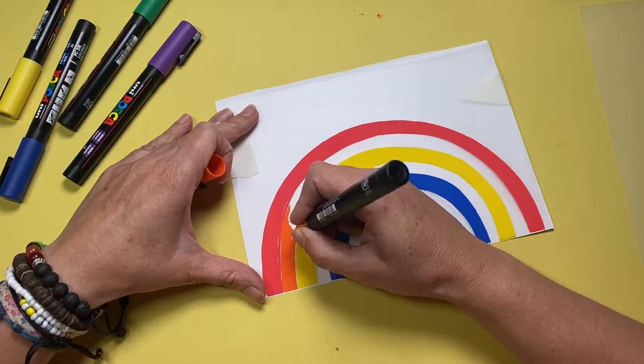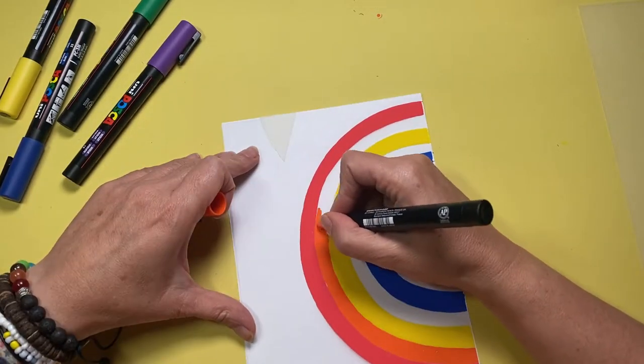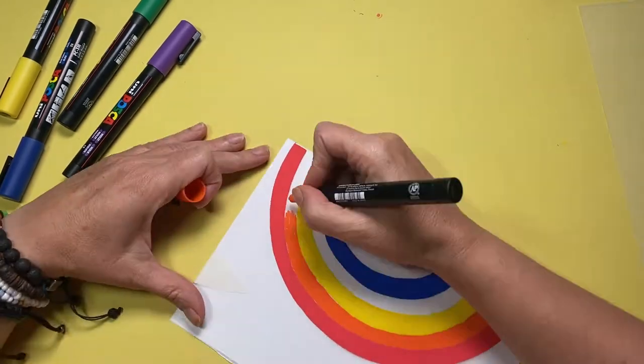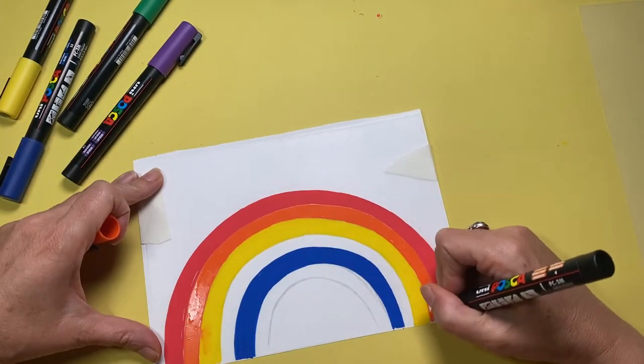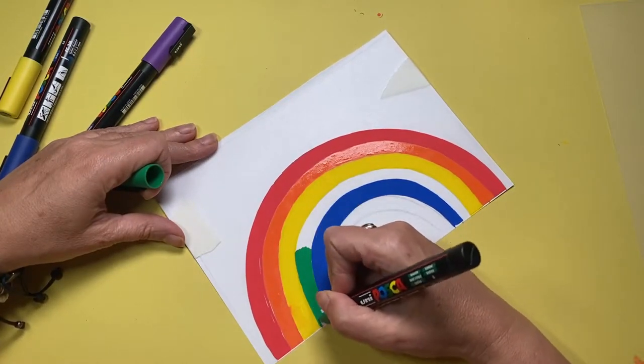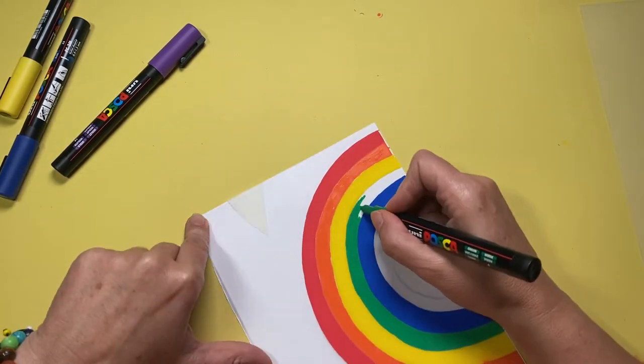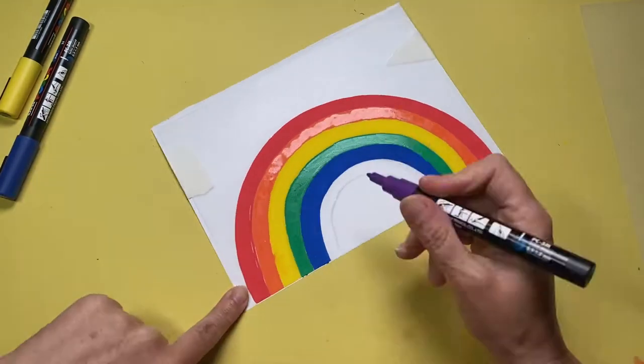This is a nice simple design and the simplest of the three pins I make on this video, or so you would think. As you'll find out later in the video, this is the only one that went wrong. Coming to the end of my rainbow design, finishing off with a lovely green and finally onto my purple.